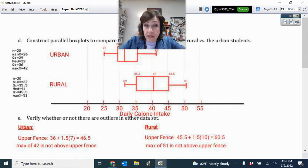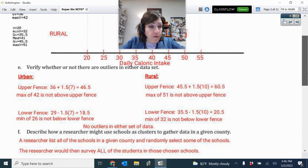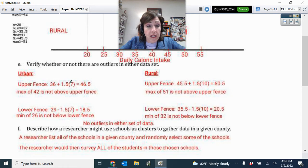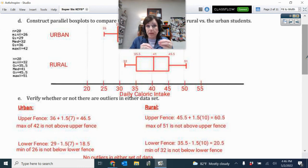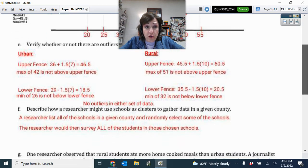Now you were constructing parallel box plots. So labeling, I labeled the caloric intake. I labeled the urban and the rural, and I had gotten that information from my five-number summary from doing the one variable statistics. So then I verified that there were no outliers in either data set. So the rule, remember, for upper fence, Q3 plus one and a half IQRs, and for the lower fence, Q1 minus one and a half IQRs. And then you have no data above the upper fence or below the lower fence to verify that there are no outliers.